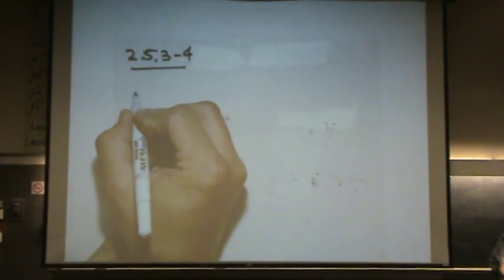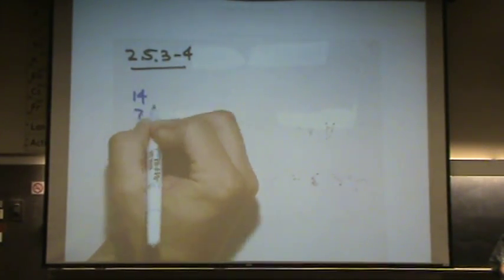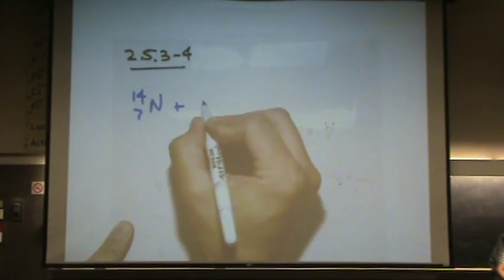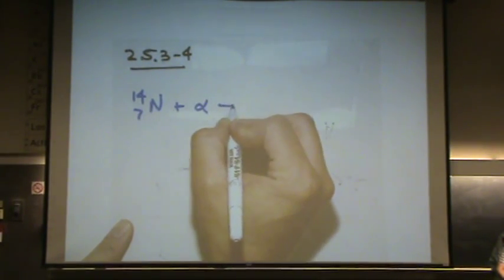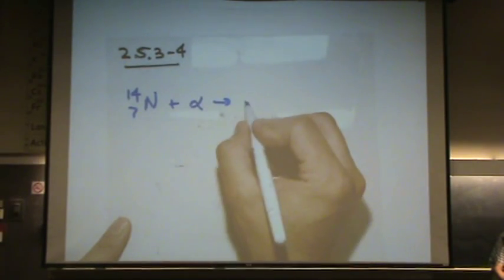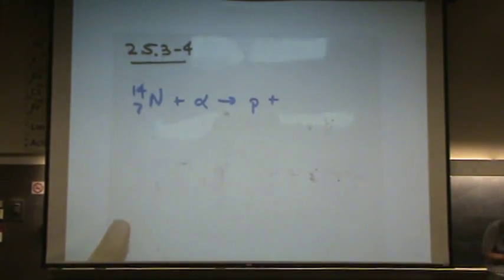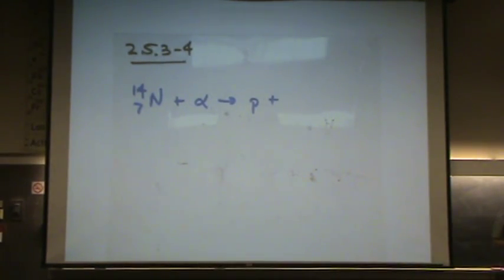Let's say we have nitrogen-14 plus an alpha particle goes to a proton plus one. But see if you can fill in the blank here, of what is the other product.